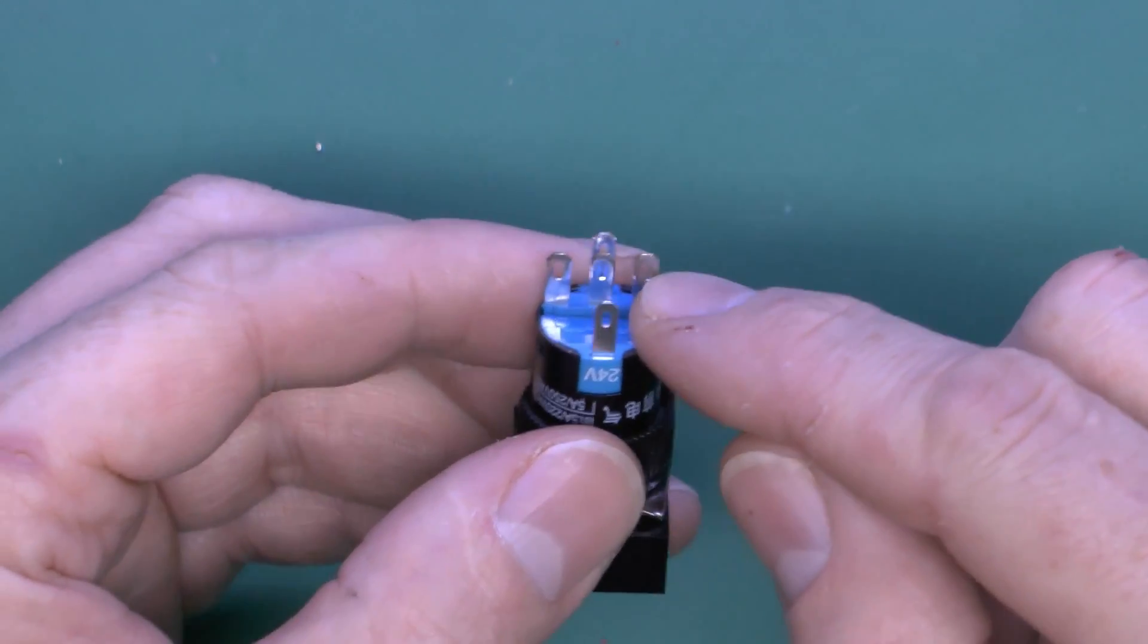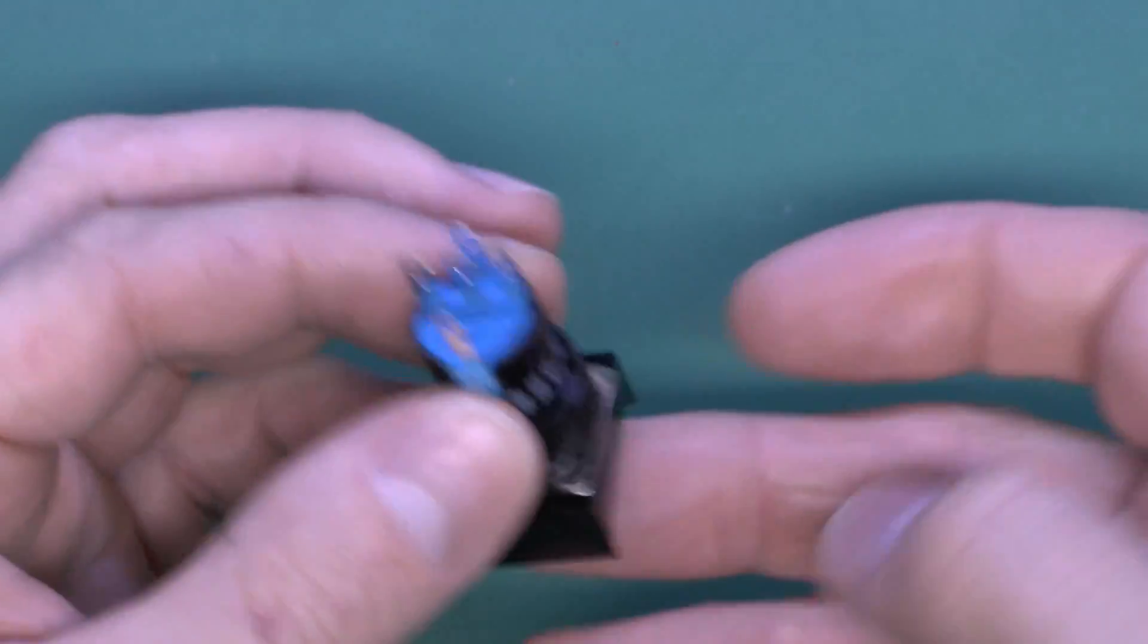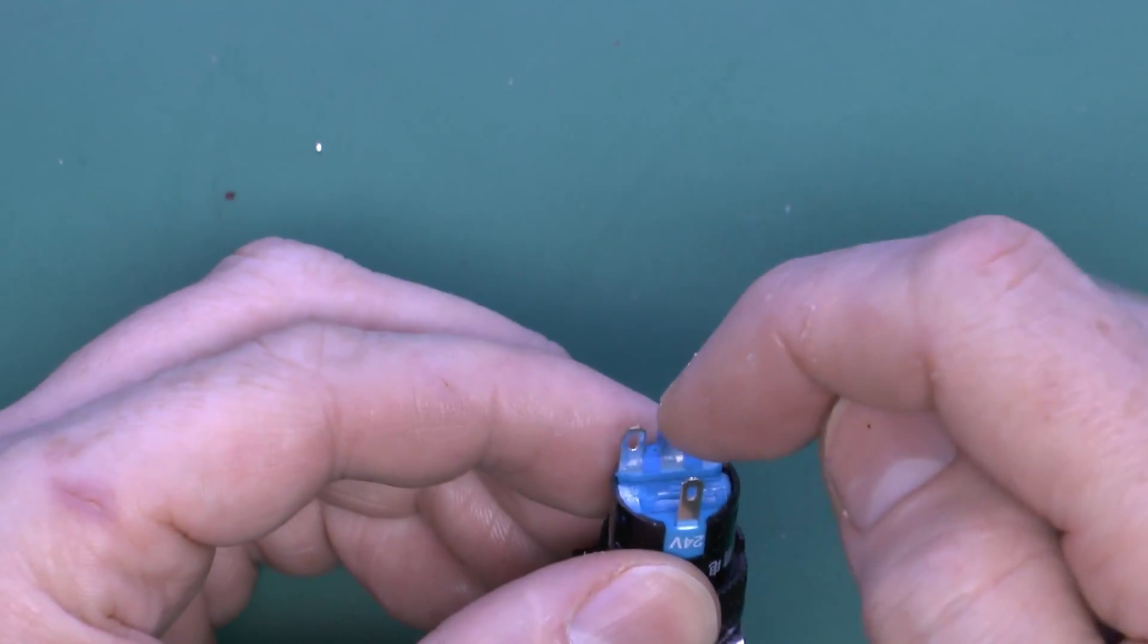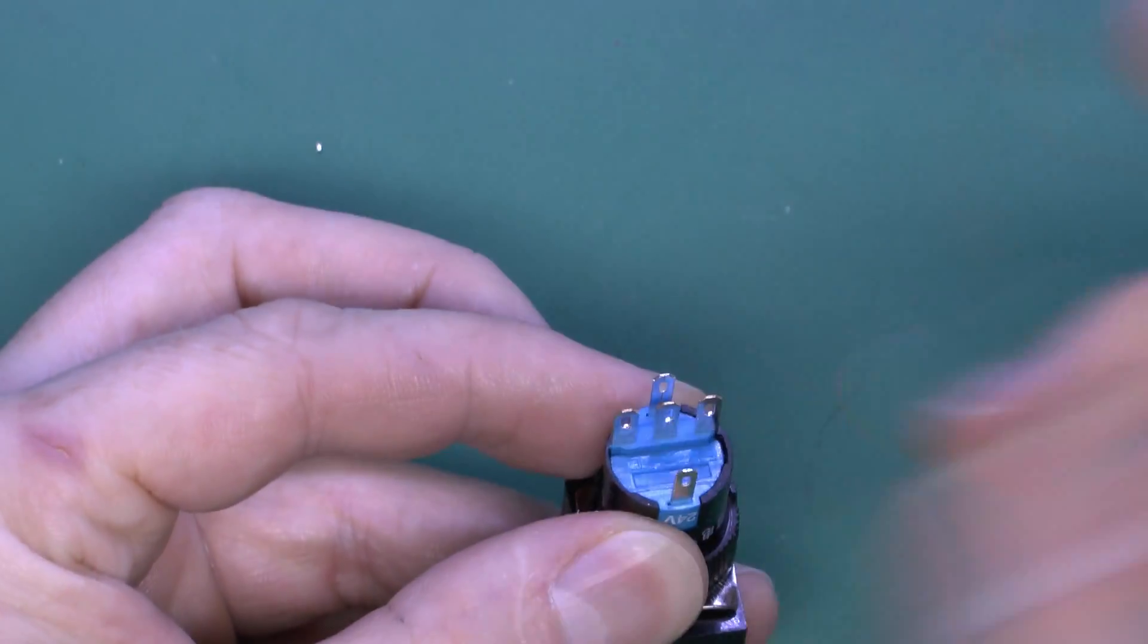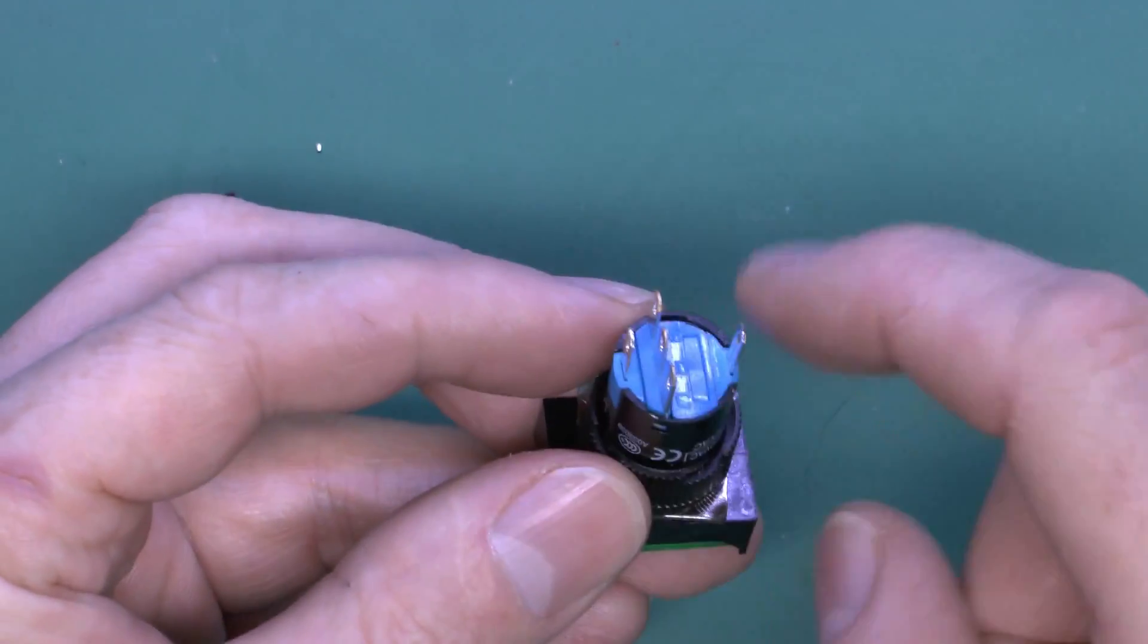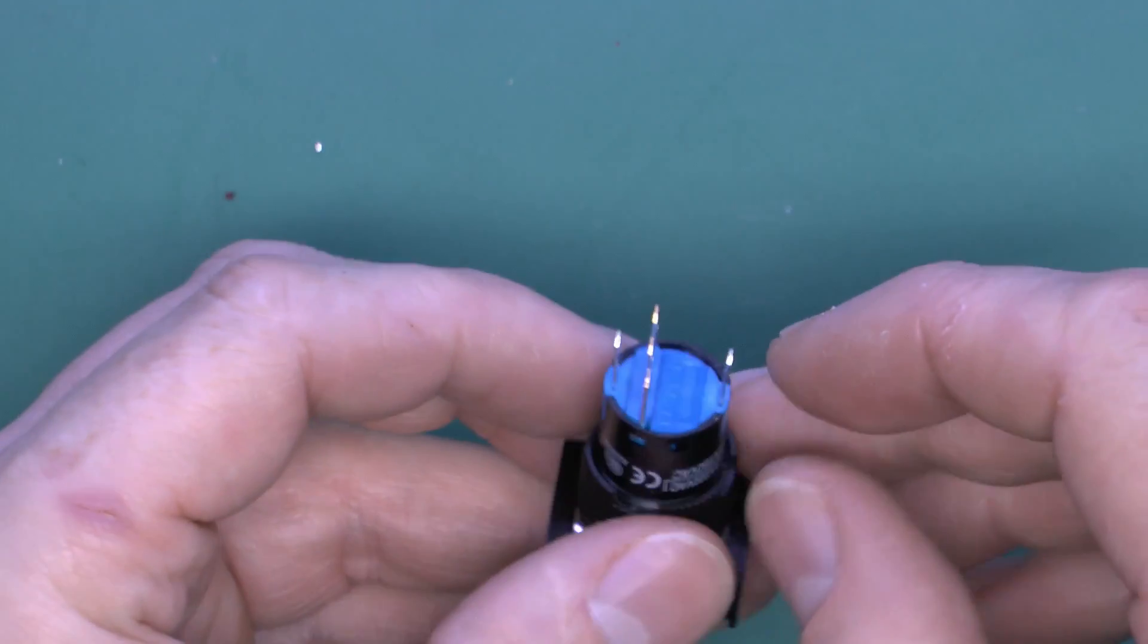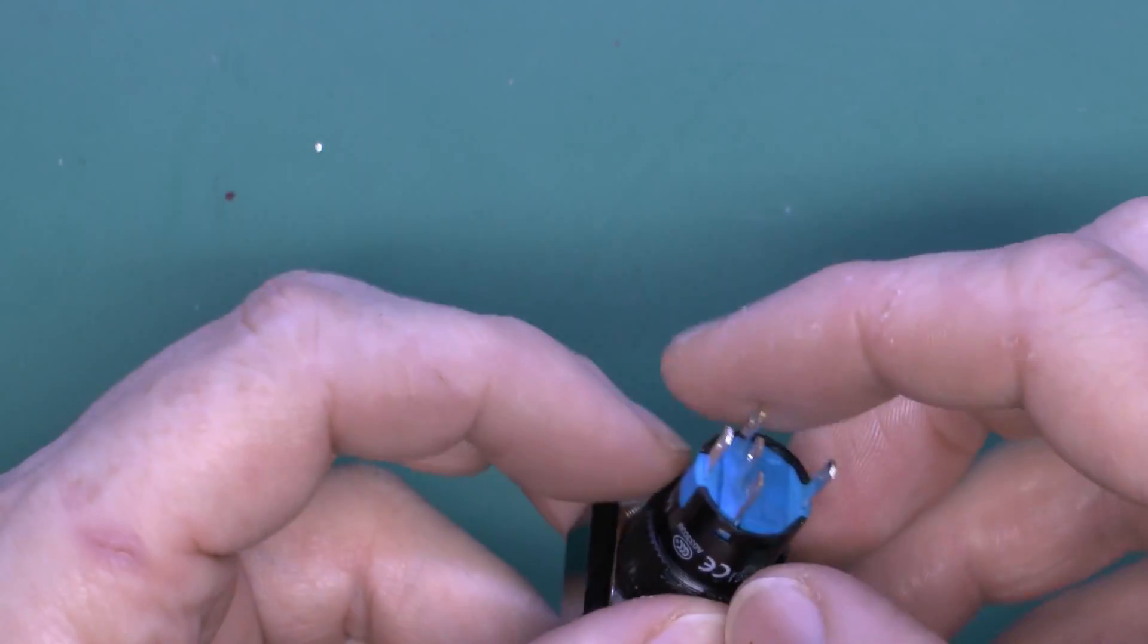These have three terminals in the middle here which is for the actual switch itself, so we've got a common, normally open and normally closed. In one position these two are connected, when you press the switch the outer two are connected, and when you release it's back to those two. The illuminated part is the two outer terminals here, so the illumination is completely separate from the actual switching part itself.